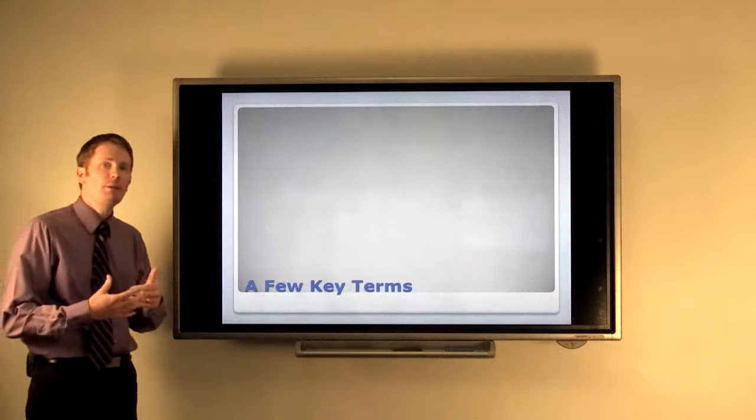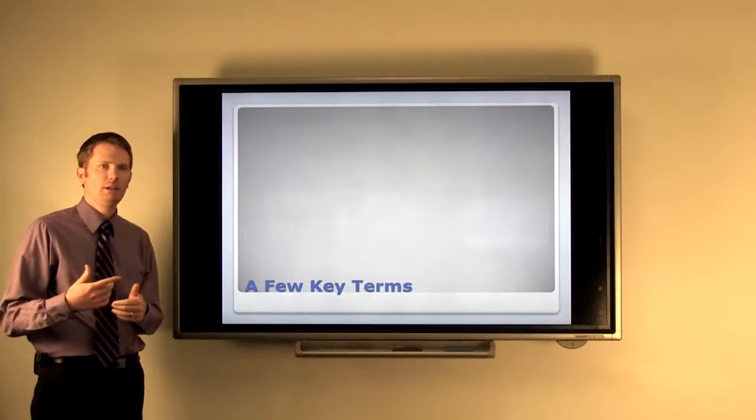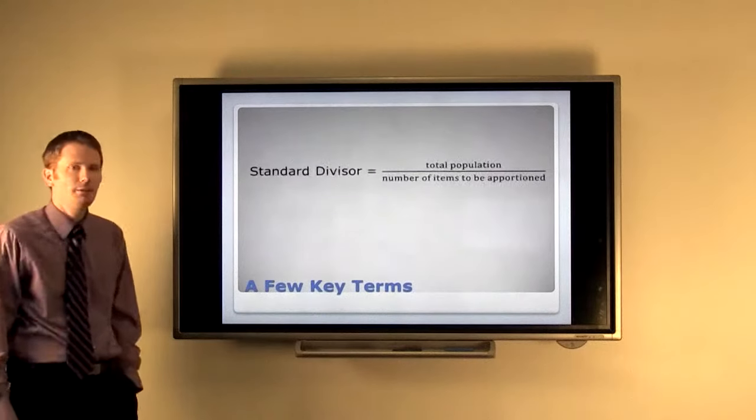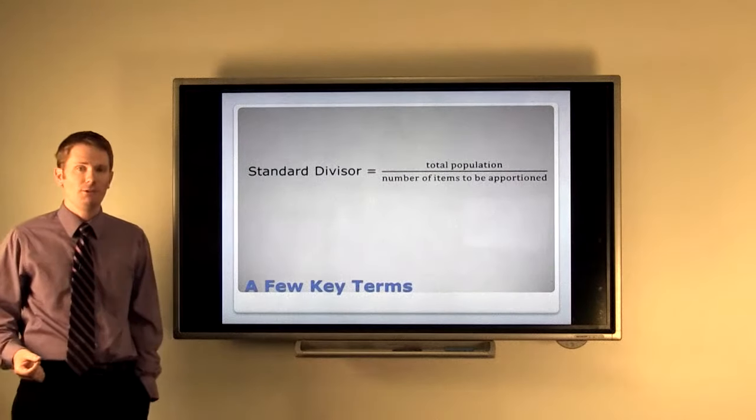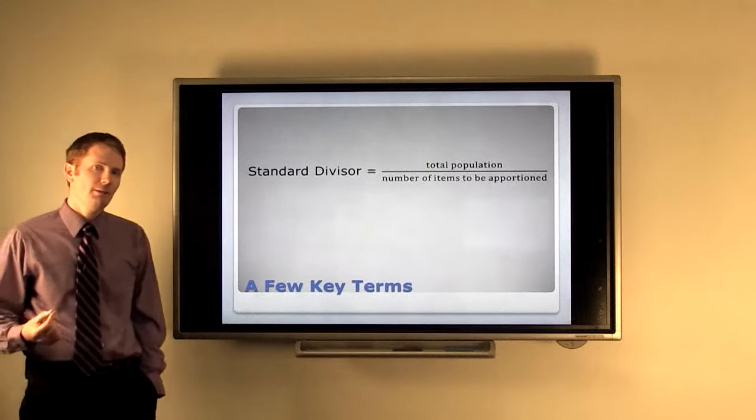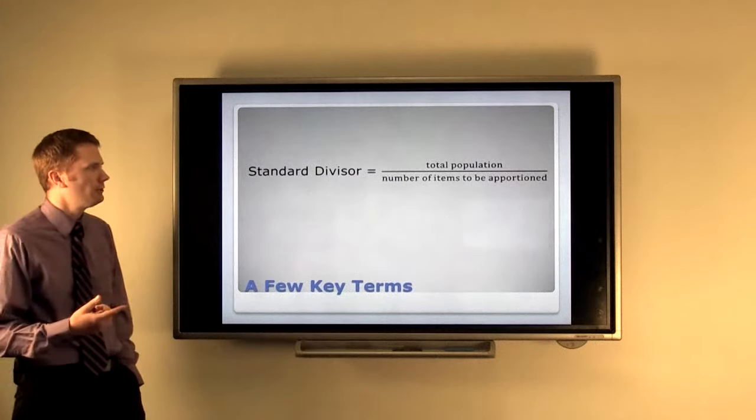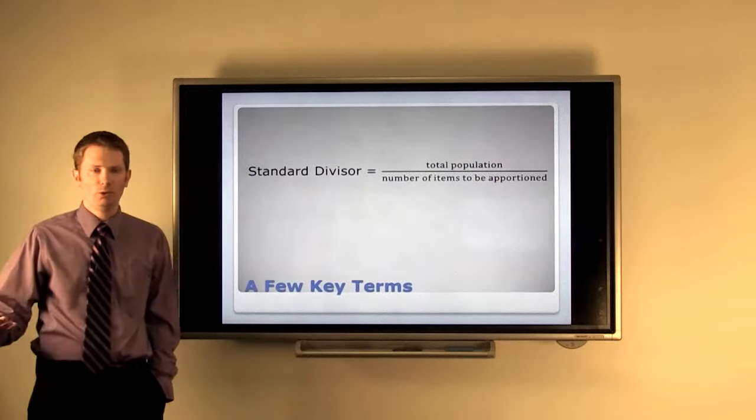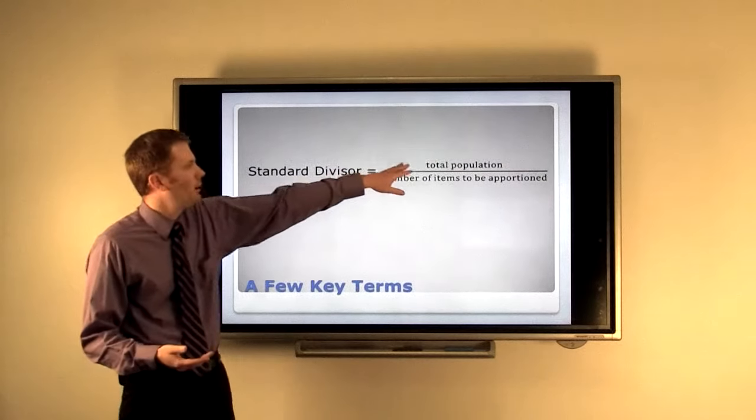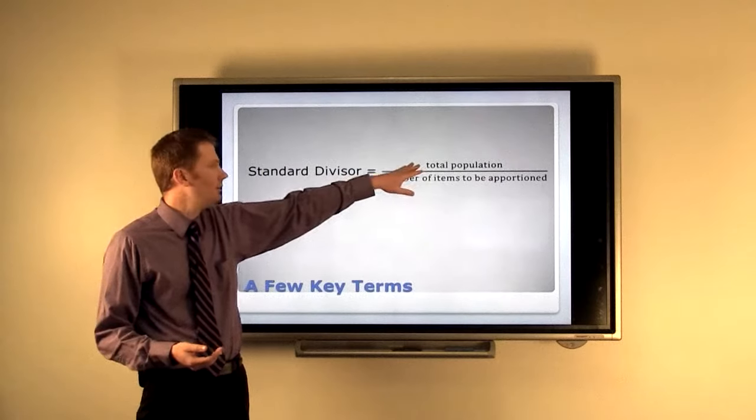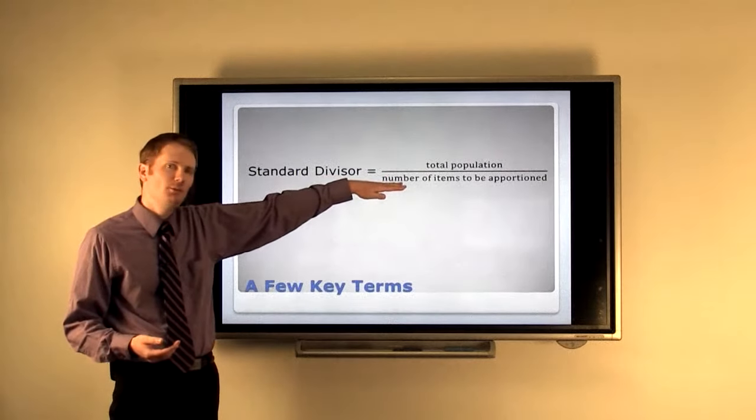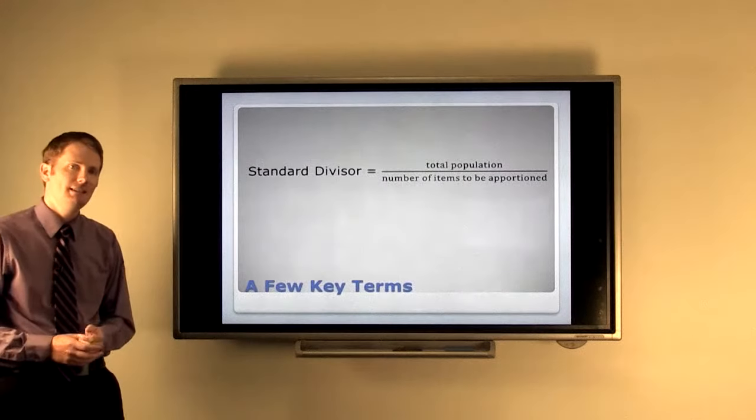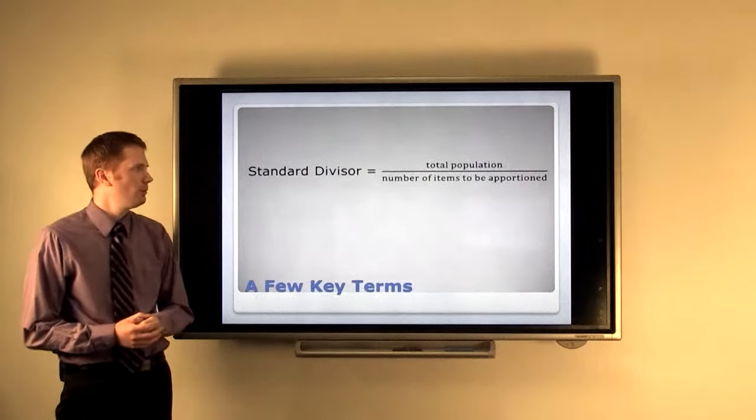We're going to talk about how Congress originally decided to do this. And we need a few terms to start off with. First of all, we have what's called the standard divisor. And the way you calculate the standard divisor is you take the total population and divide it by the number of things that you want to apportion. So, in our case, this would be the population of the United States divided by how many seats we have in the House of Representatives. Originally, there were 105 seats to be in the first House of Representatives.